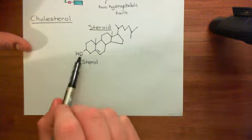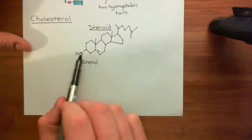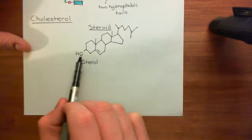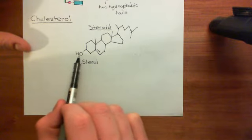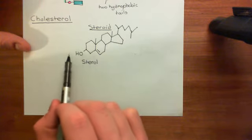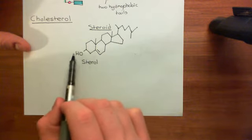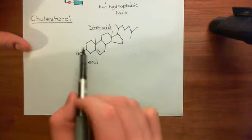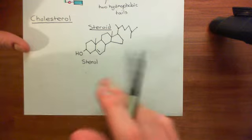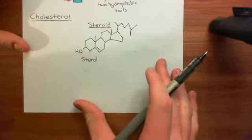Down here we have an alcohol group, and alcohol groups are very polar. Oxygen has a much higher electronegativity than hydrogen. So we do have one little glimpse of a polar structure — cholesterol does have a little polar head, and that will become important later.